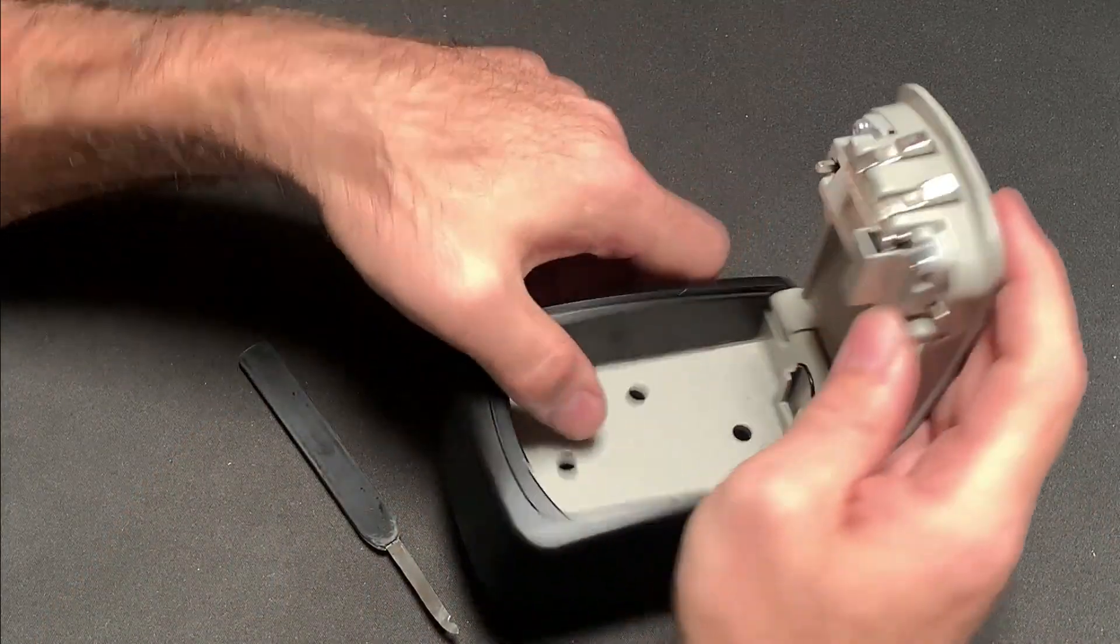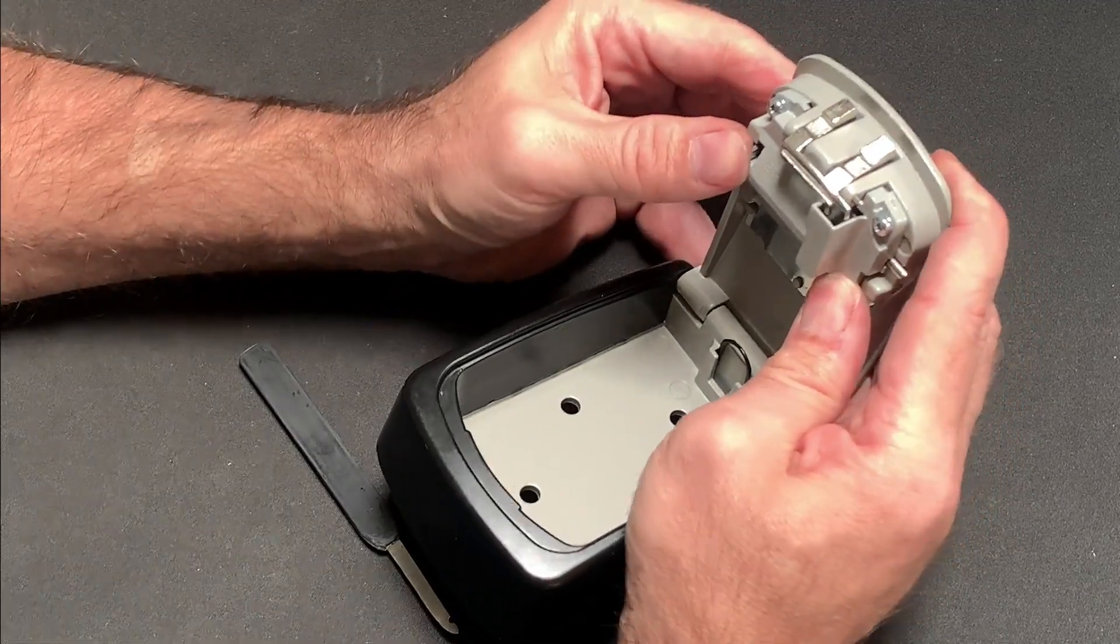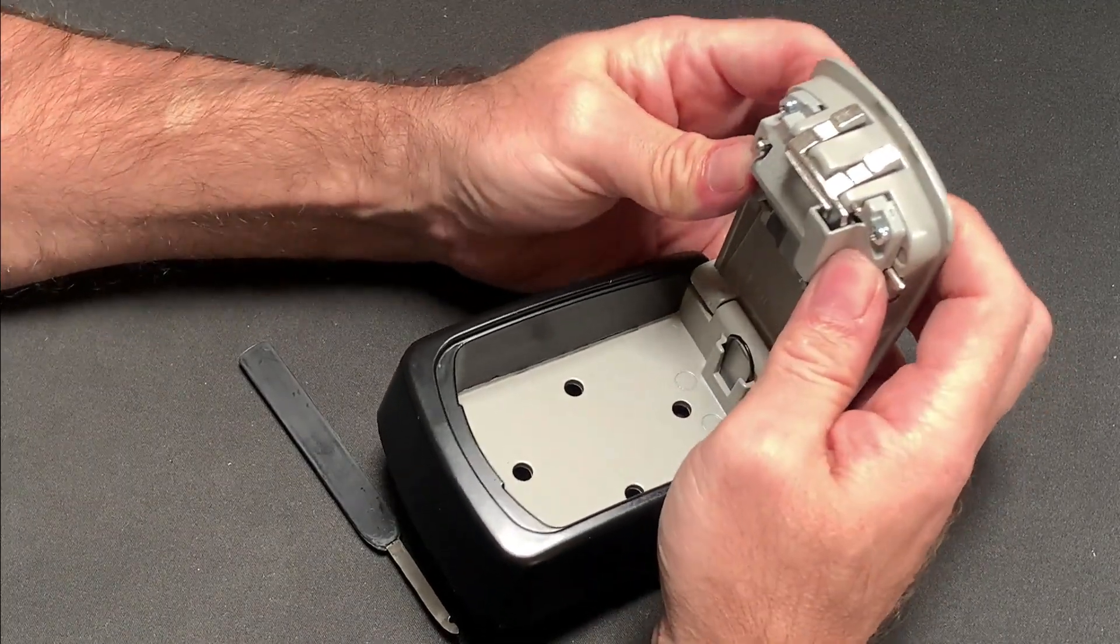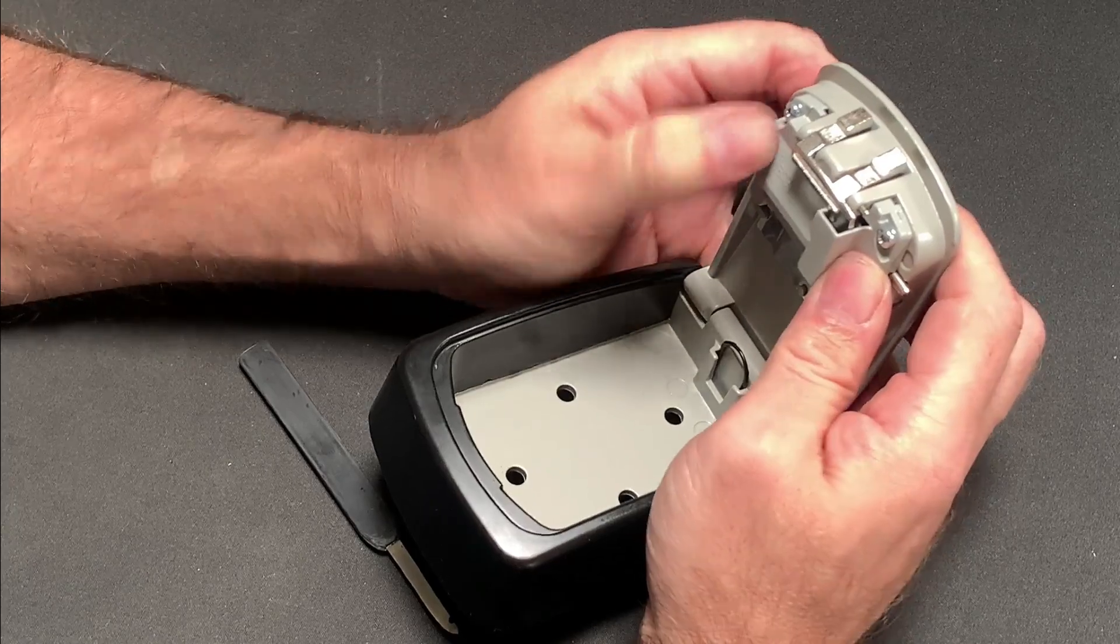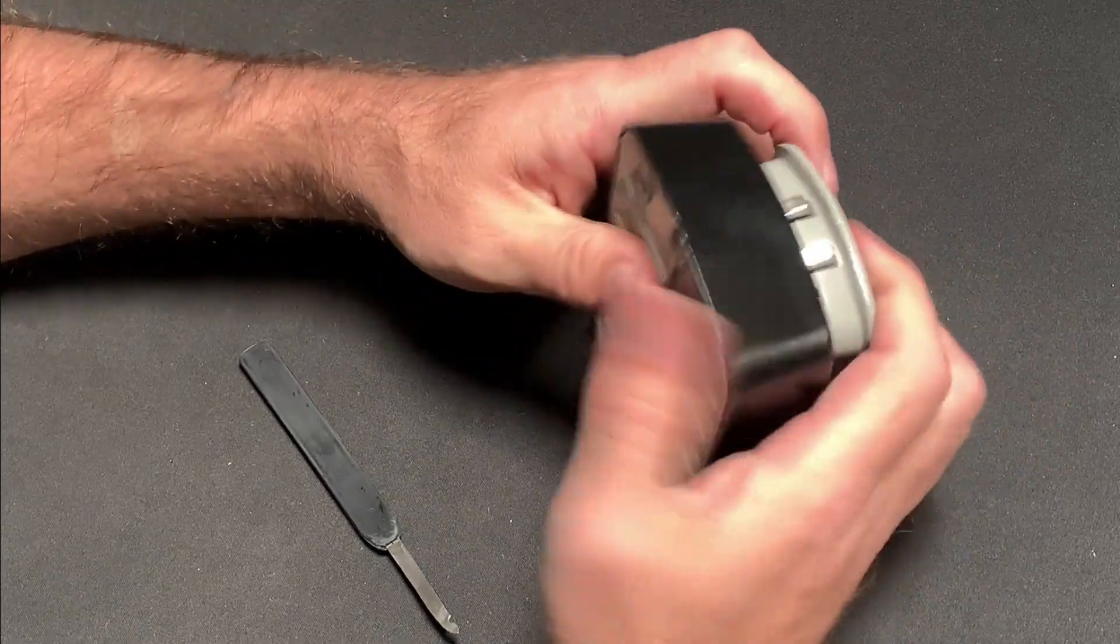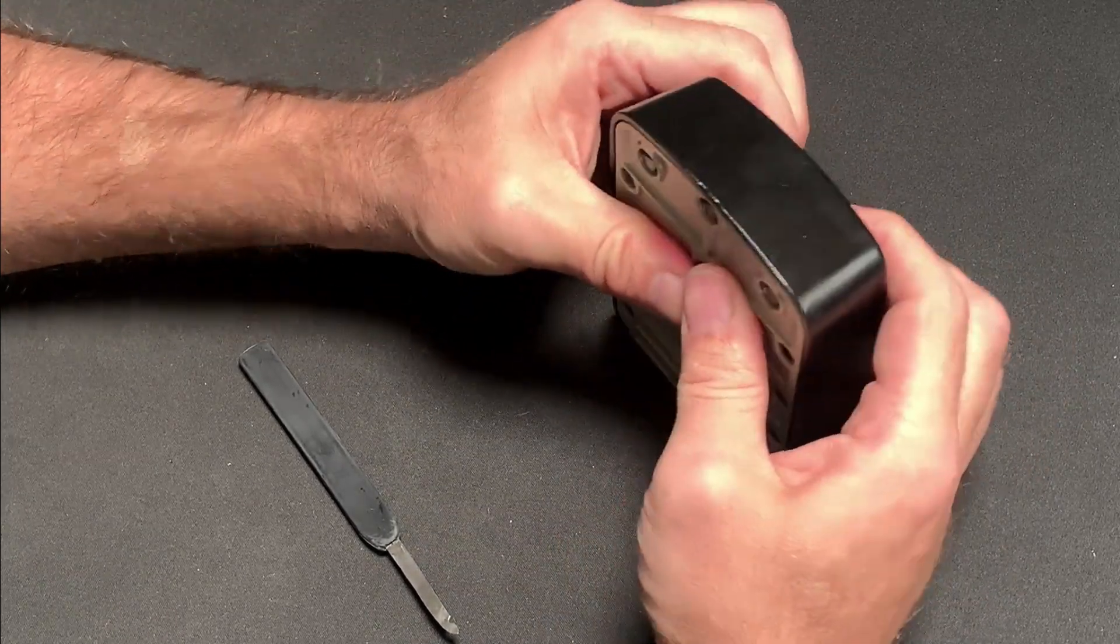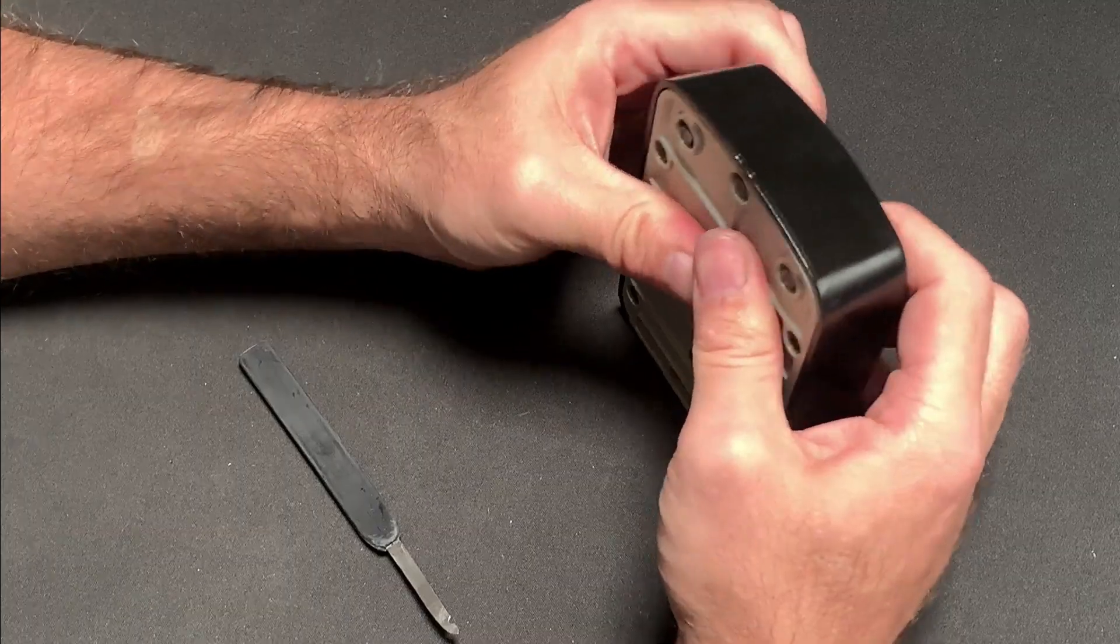I used this wall safe made by Master Lock and set the lock to an unknown combination by changing the dials before scrambling the wheels whilst they were facing away from me. First I wanted to try to decode this lock using the tip of the tool.